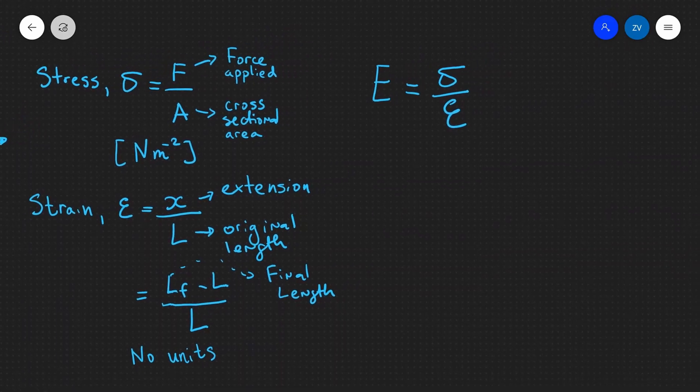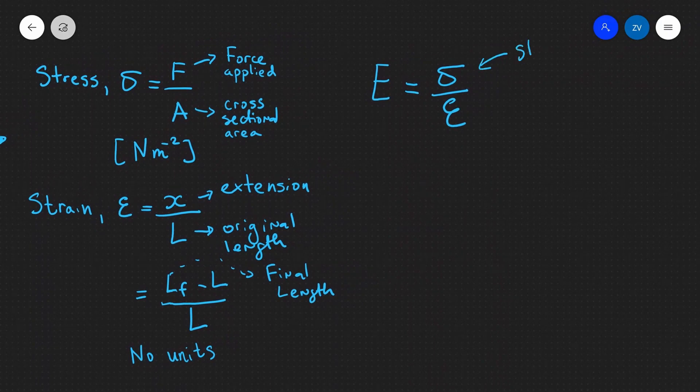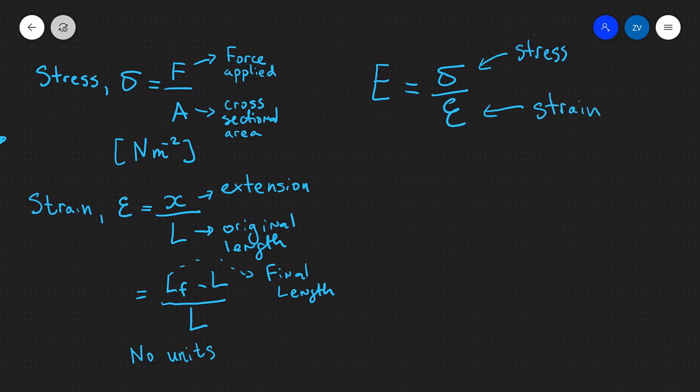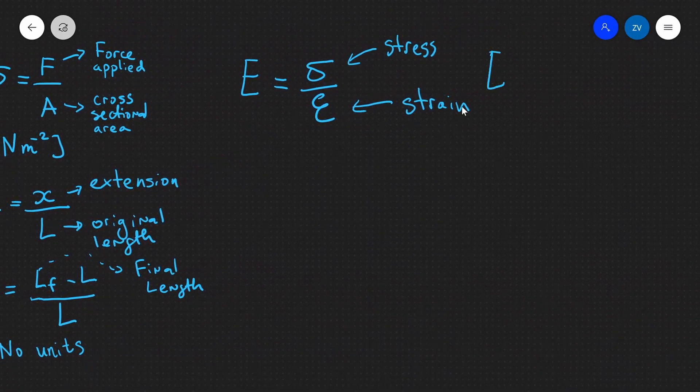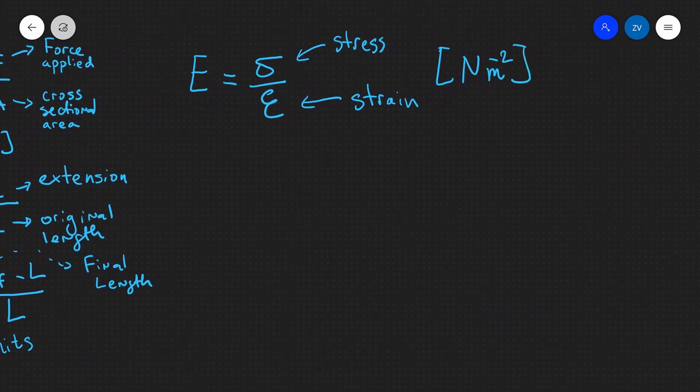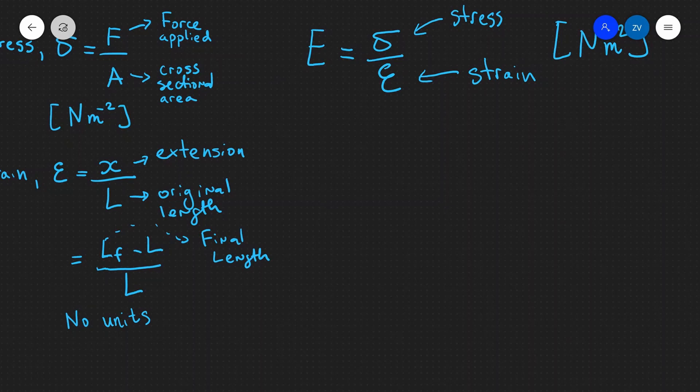Young's modulus is simply stress over strain. Because stress has units of newtons per meter squared and strain is unitless, Young's modulus has units of newtons per meter squared as well. We can extend this equation even further: stress is F/A, and strain is x/L. So E = (F/A)/(x/L).